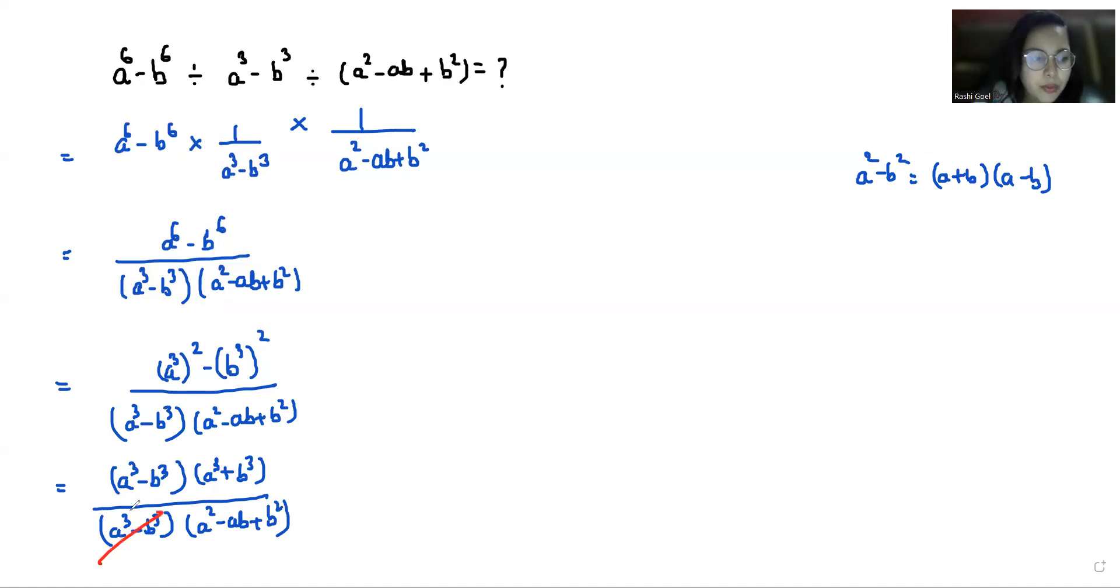Now we can cancel out this from numerator and denominator. And with the help of the formula a^3 + b^3...